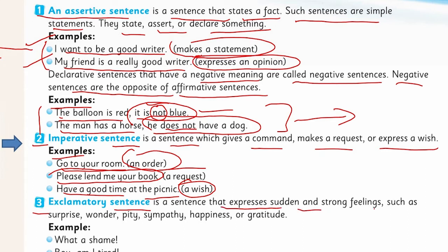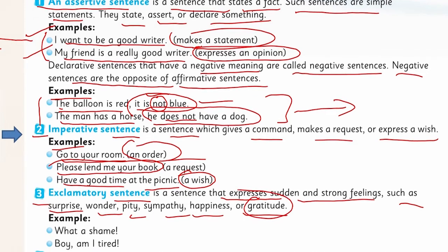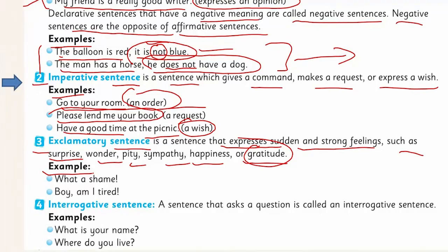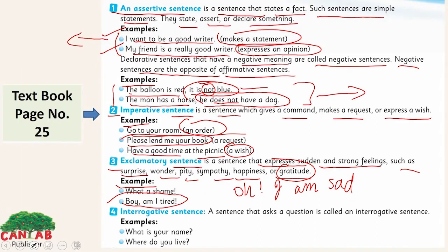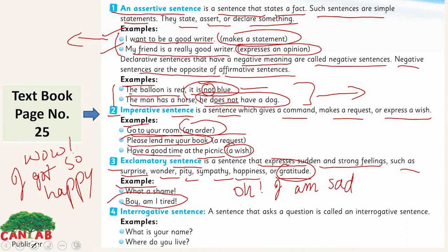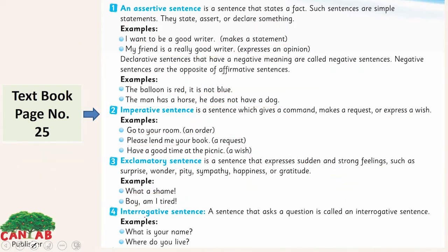Look at the third type: the exclamatory sentence. An exclamatory sentence expresses sudden strong feelings such as surprise, wonder, pity, sympathy, happiness, or gratitude. For example: 'What a shame!' expresses pity or sympathy. 'Boy, I am tired!' expresses tiredness. 'Oh, I am sad!' and 'Wow, I got so happy!' are also examples of exclamatory sentences which express strong feelings.